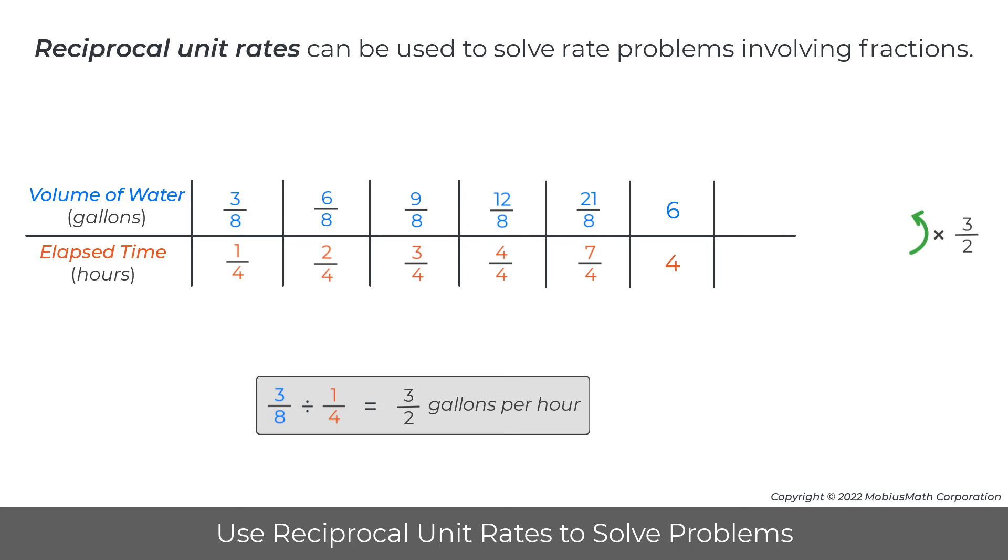Likewise, if the value for the volume of water that has leaked is known, that value can be listed in the top row and divided by three-halves or multiplied by two-thirds to find the time that it took for the faucet to leak that volume of water.